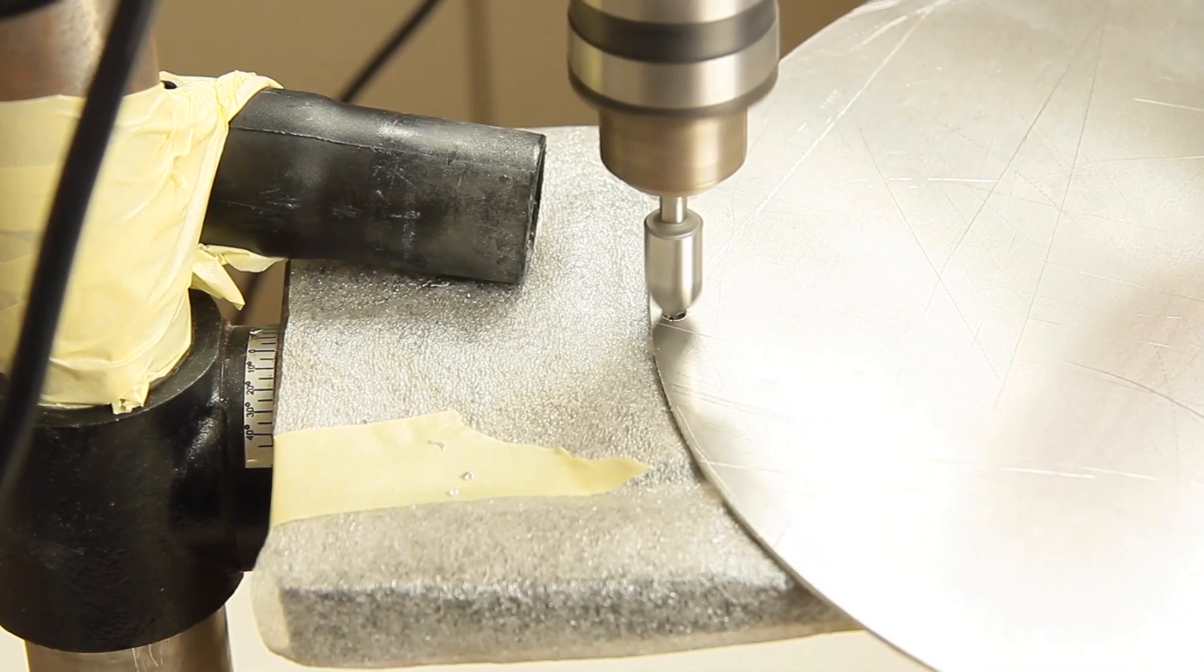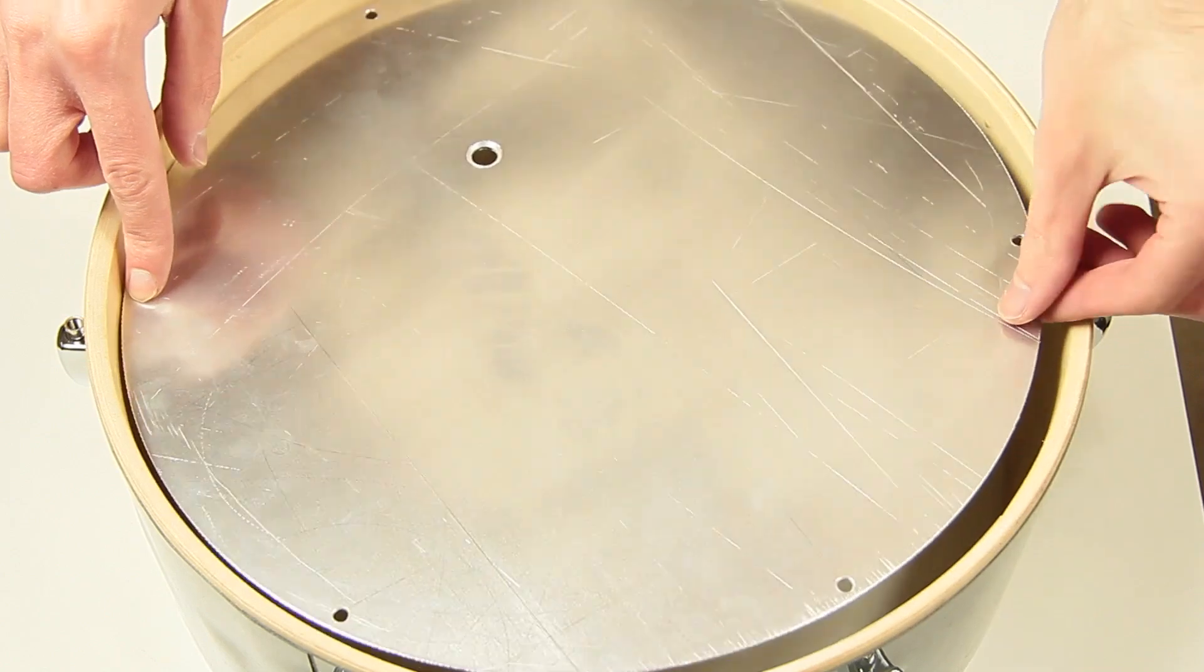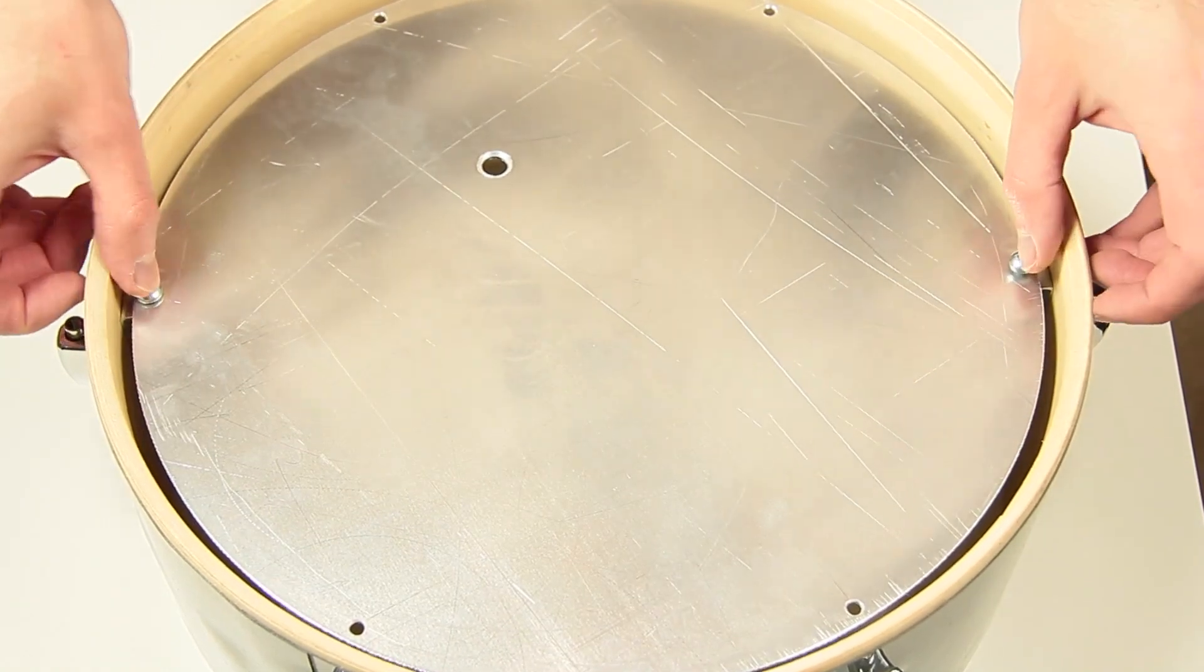Get rid of the edges with a countersink. Now we can try out if the holes fit with the applied angles.